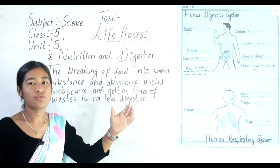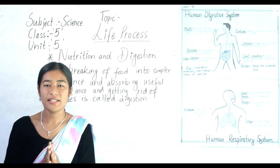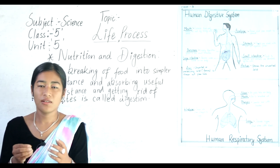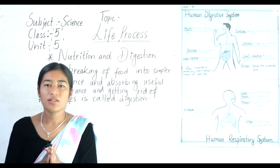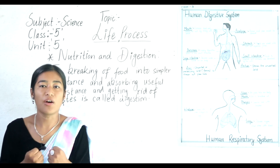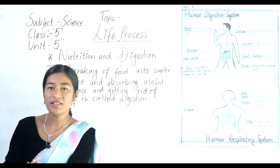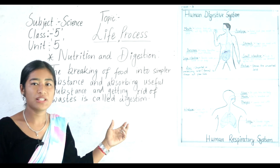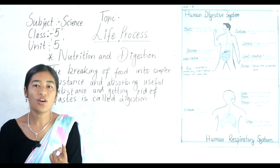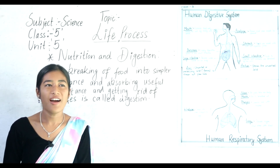The breaking of food into simpler substances, absorbing useful substances, and getting rid of waste — that is called digestion. The process of separating useful substances as well as unnecessary substances in food is called digestion. Necessary substances are absorbed by our body and unnecessary substances are thrown out. The whole process is called the digestive system, which breaks food and separates necessary and unnecessary substances.